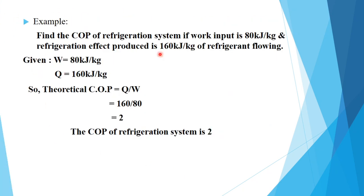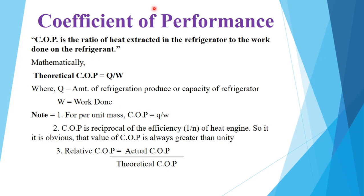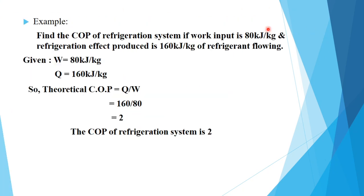Let's look at an example for coefficient of performance. Find the coefficient of performance of a refrigeration system if the work input is 80 kilojoules per kg and the refrigeration effect produced is 160 kilojoules per kg of refrigerant fluid.